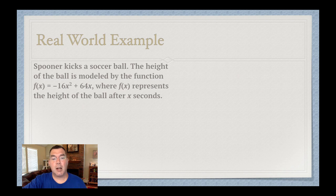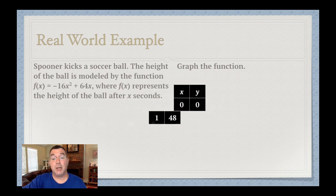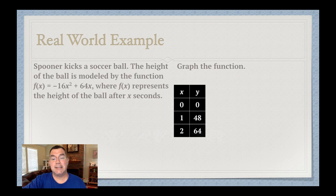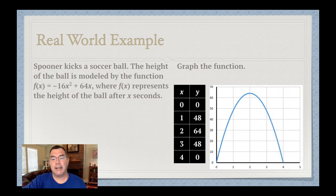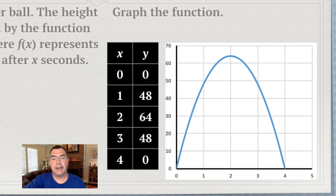Spooner is kicking a soccer ball, and the height of the ball is modeled by that function there, negative 16x squared plus 64x, where f of x represents the height of the ball after x seconds. So the first thing I'm going to do is graph the function, and again, I just plug in x values that make sense. I'm going to start at zero because that's when time started, and once I have enough points, I can graph it, and there's my graph right there.